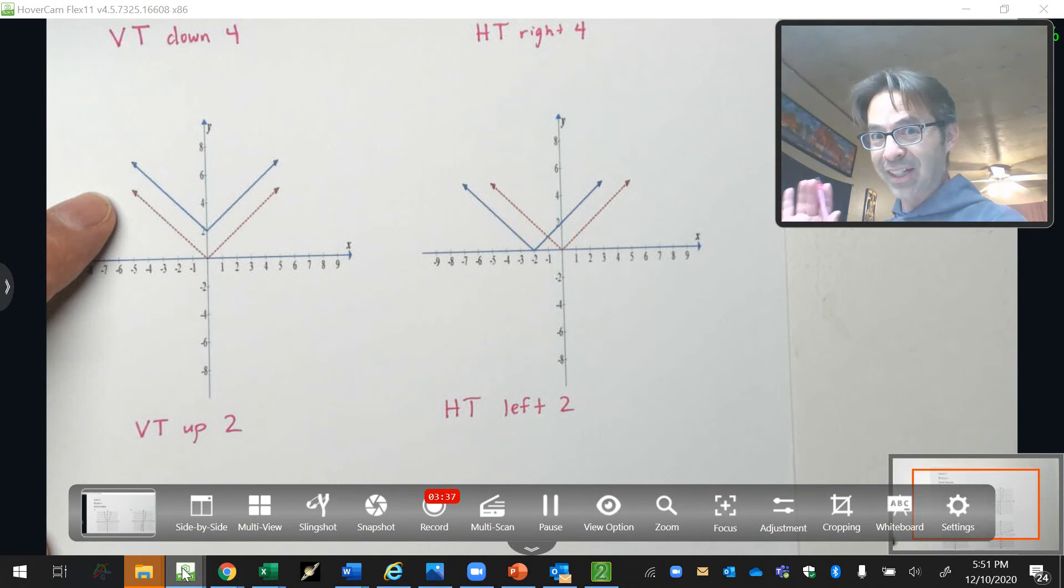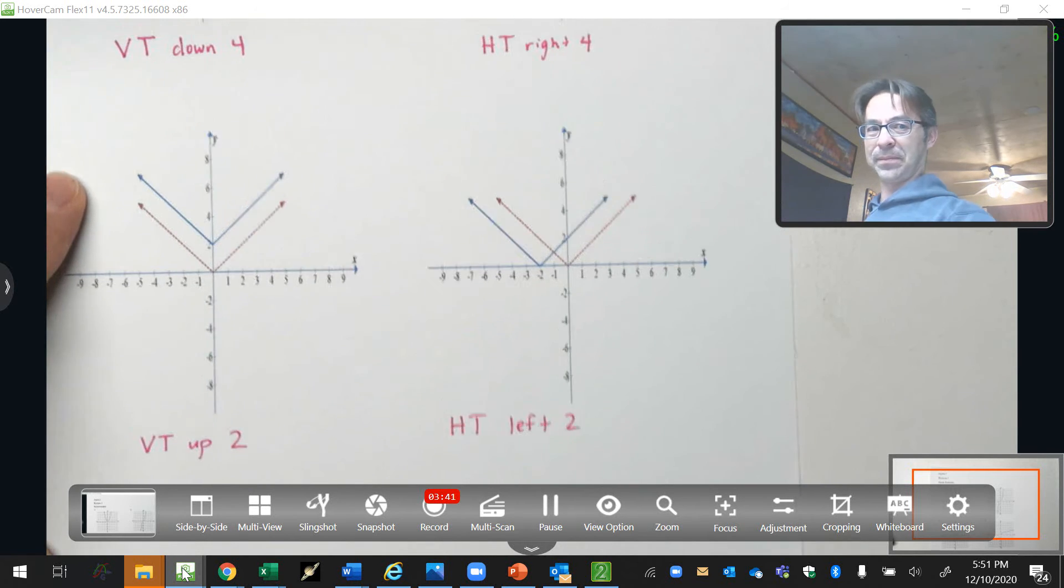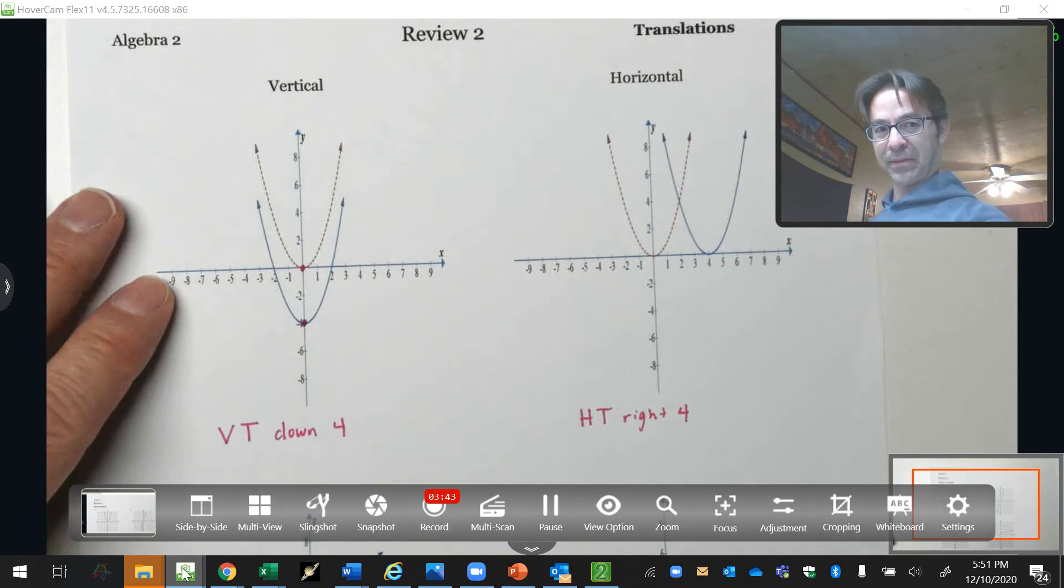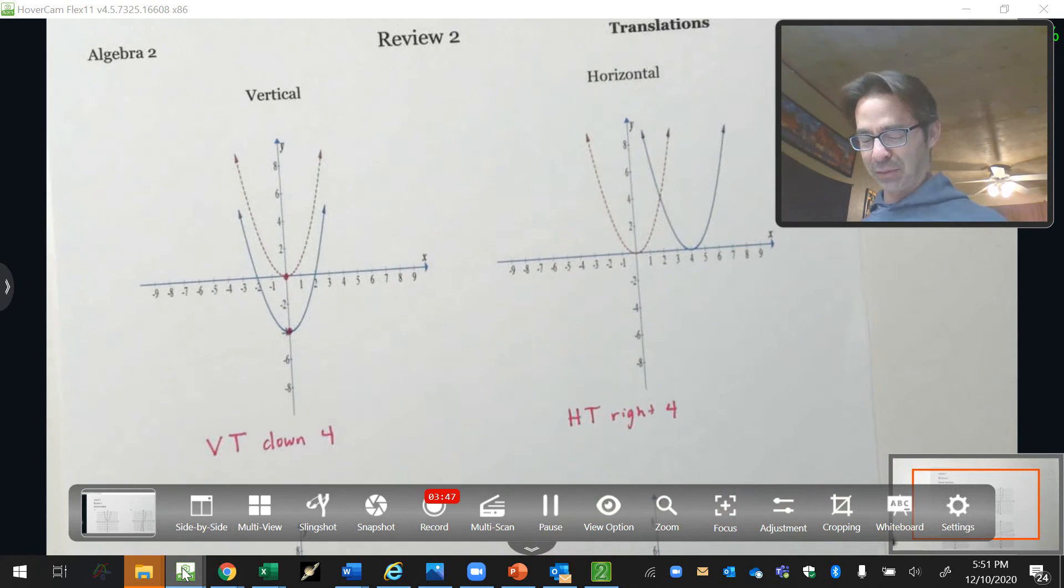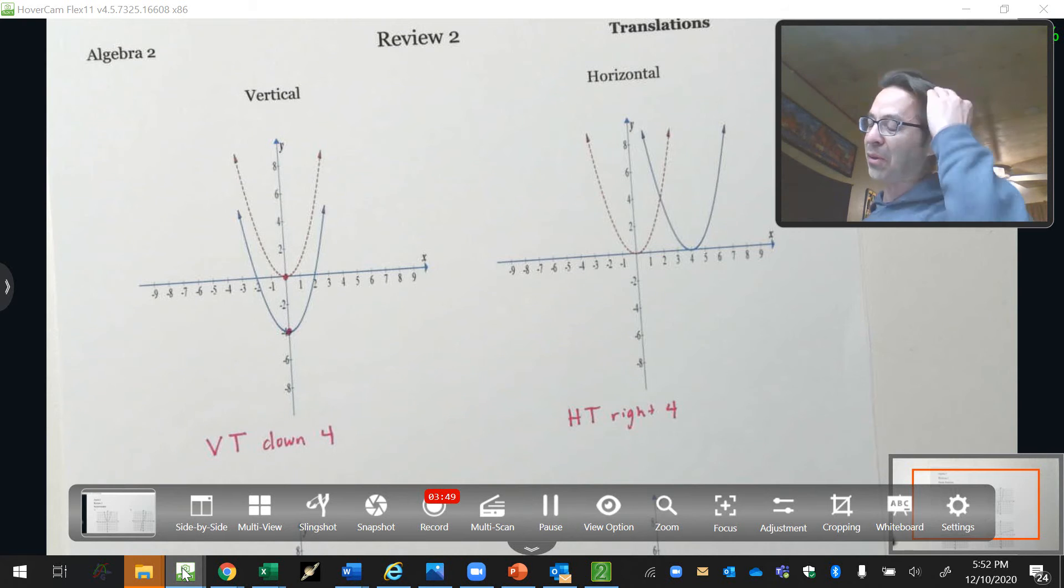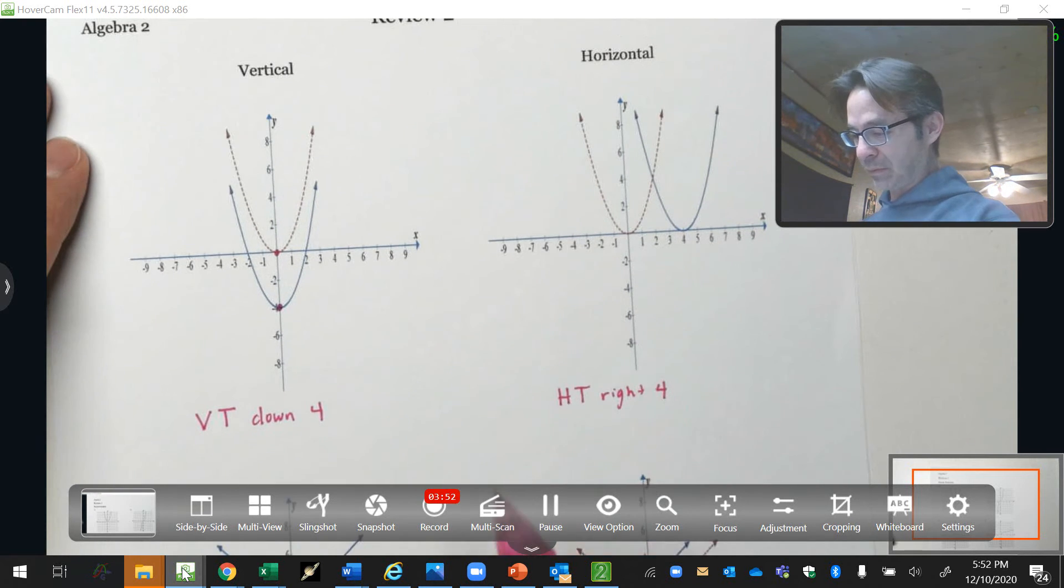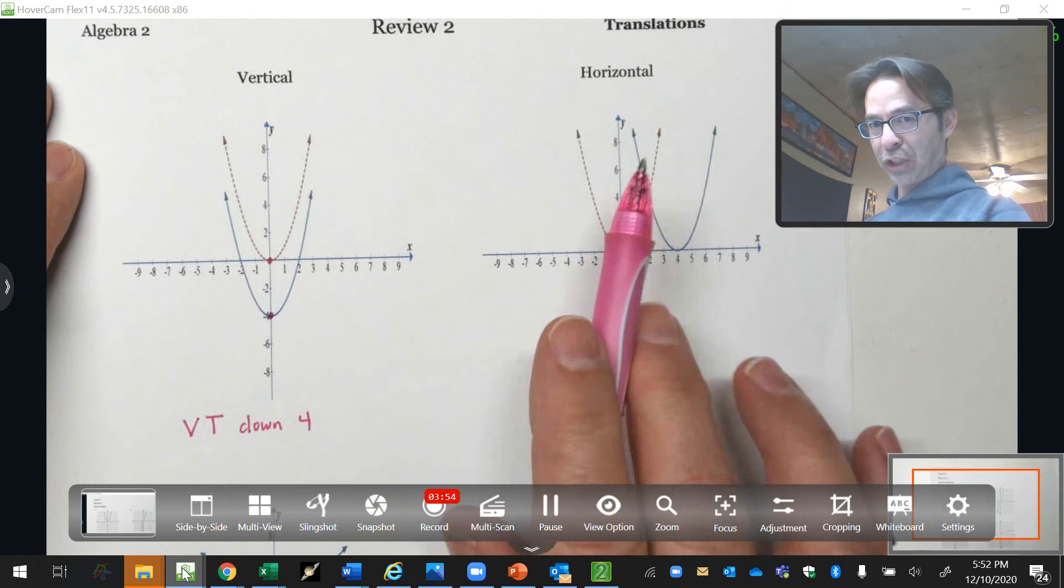Now, let's do the hard part. Writing the equation. We're going to do vertical first. Vertical is easy. Horizontal is where your mind gets blown. Vertical is easy, horizontal is difficult. So, caution.